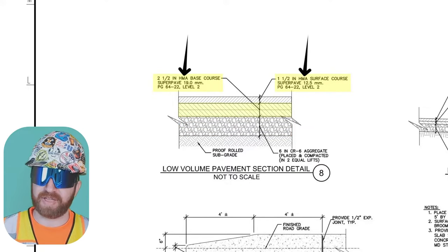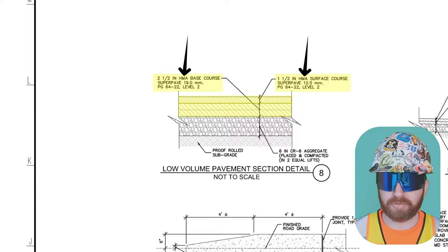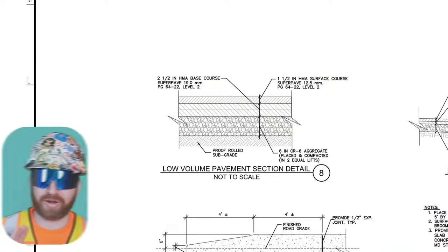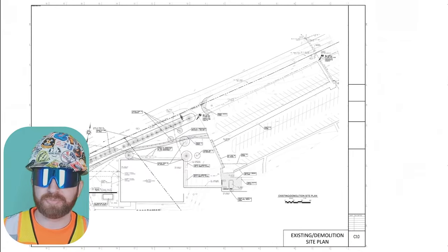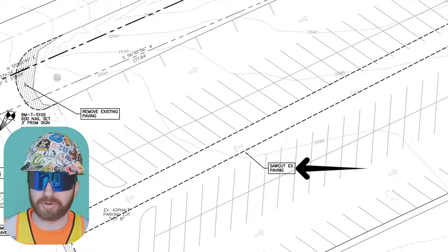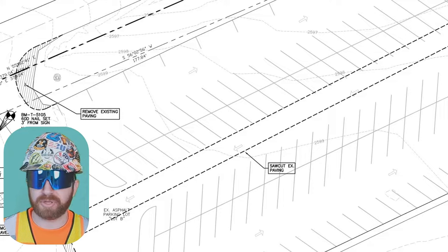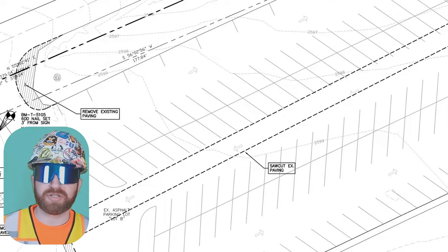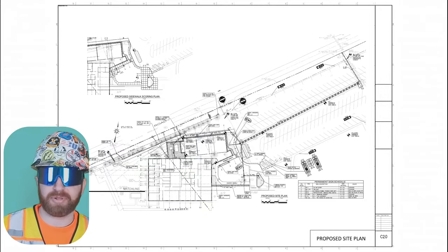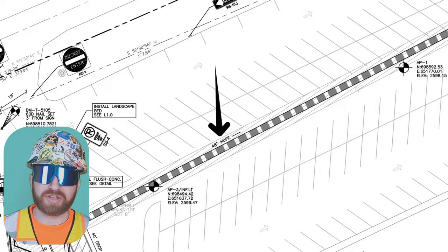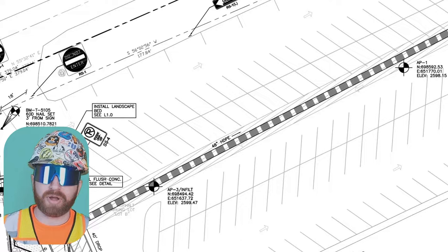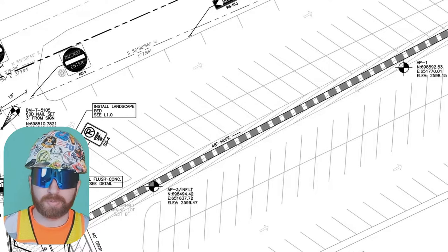Next we've got two layers of HMA — hot mix asphalt — which is a good reason why we read that abbreviations page. Keep this detail in mind as we move forward. Jumping to C1.0, we stumble on a 'saw cut existing paving' note. There's a saw cut here, so something's going to be going under this section of paving. Jumping to C2.0, the proposed site plan, we zoom in on that same area and see a 48-inch HDPE line going right where we're going to saw cut — which is the purpose for that saw cutting.